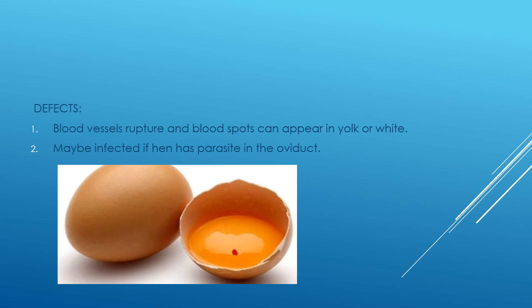During egg formation, various defects may develop. If a blood vessel happens to rupture in the ovary or along the oviduct, blood spots occur in the yolk or in the white — that depends on the location of the lesion in relation to the stage of egg development.